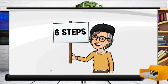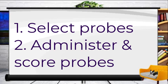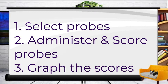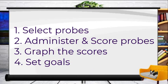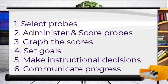There are six steps for CBM implementation. First, we select the probes to use. Second, we administer and score the probes. Third, we graph the scores. Fourth, based on that information, we set goals for the student. Fifth, we make instructional decisions about how we're going to teach the student. And sixth, we communicate progress to the student, to our other teaching colleagues, and to the families.